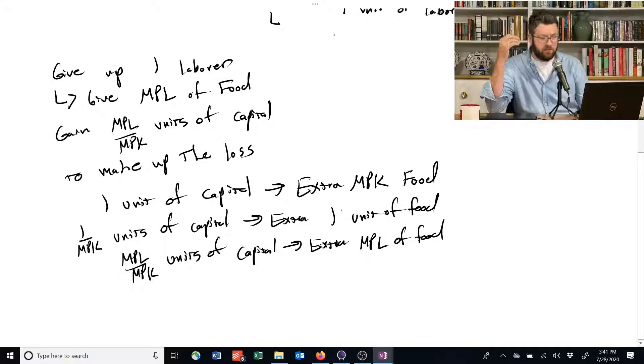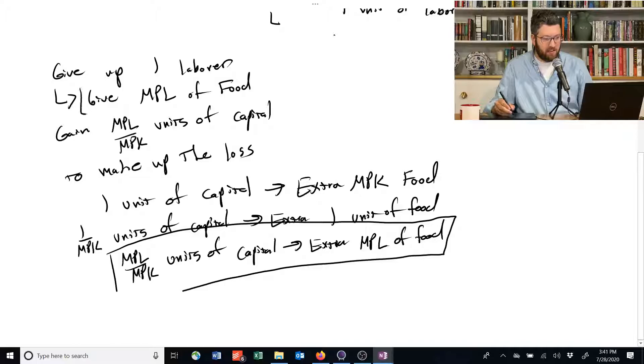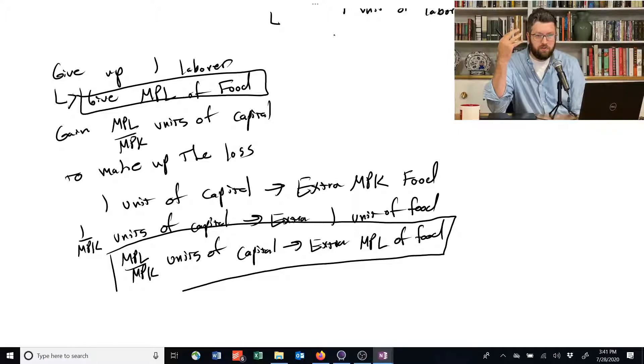So this is my intuitive explanation. And notice that if we gain this MPL divided by MPK units of capital, we obtain one extra MPL of food. And that is exactly how much we lost when we lost the worker. So this thing is the underlying intuition for why the marginal rate of technical substitution has anything to do with these marginal products of capital and labor.